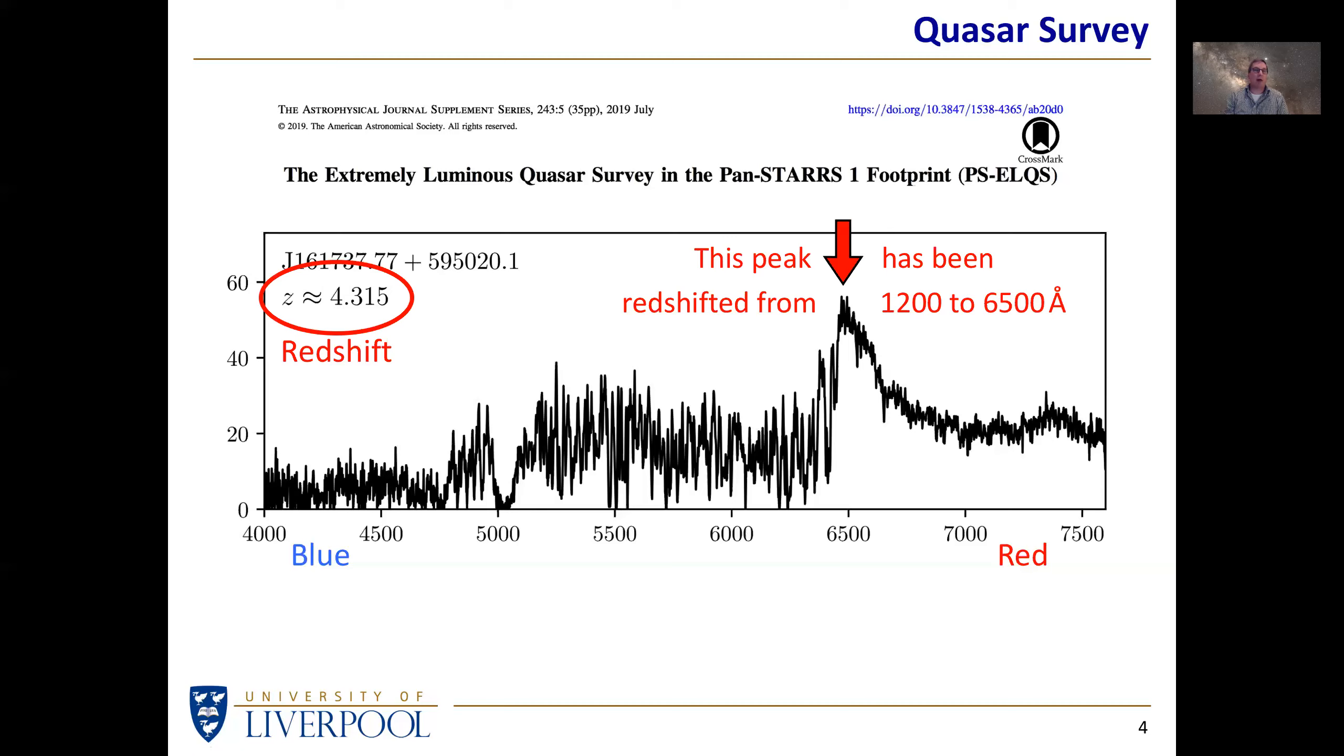In this case that would be 5300 divided by 1200, that gives us a redshift of 4.3. They've calculated it more accurately and they reckon that the redshift, which is usually indicated by the lowercase z, is 4.315. That is enormous. A redshift of 4.3 works out that this quasar is very remote and moving away from us very quickly. This is one of the remotest quasars visible from the UK.